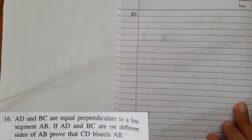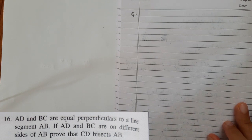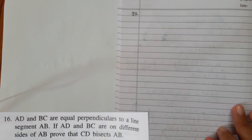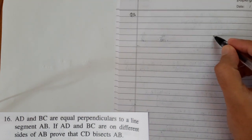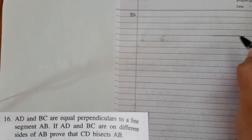AD and BC are equal perpendiculars, so we have to draw perpendiculars, but where? To the line segment AB. One thing is very clear that we need to draw a line segment AB.